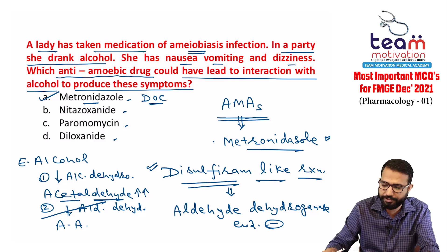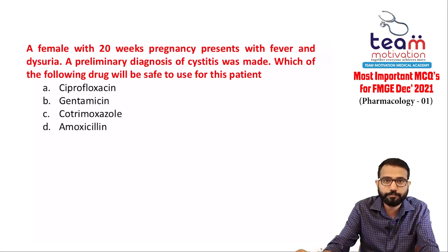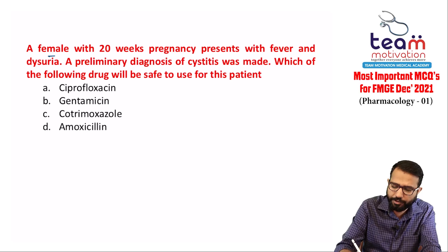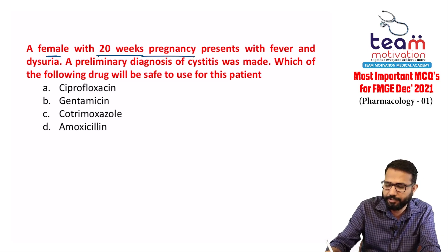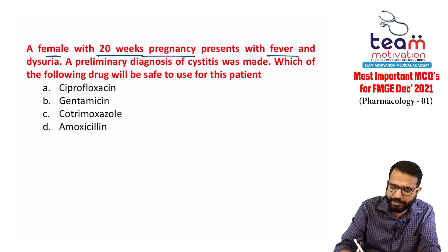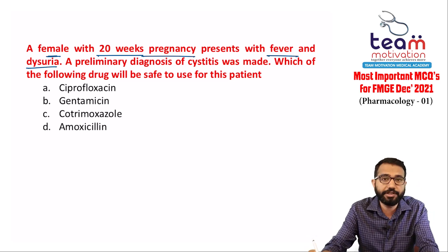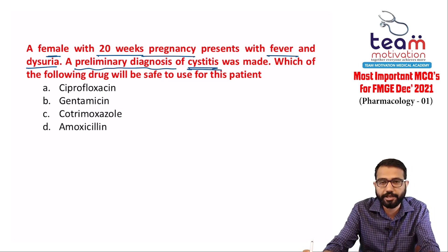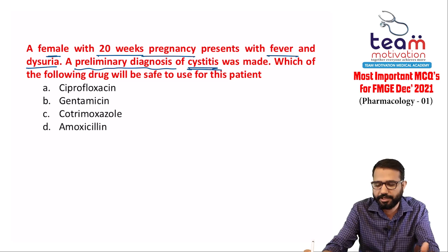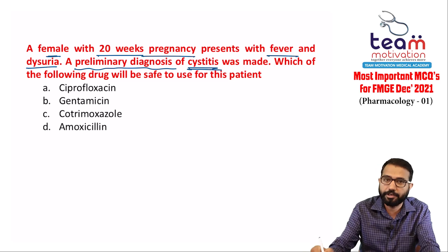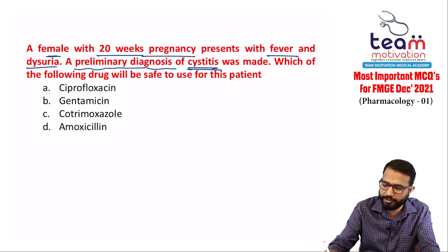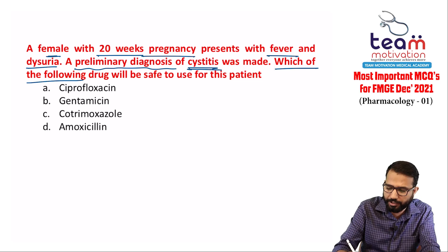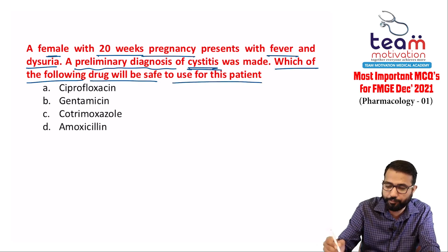The second question: a female at 20 weeks of pregnancy presents with fever and dysuria. A preliminary diagnosis of cystitis was made — infection in the bladder, i.e., UTI. Which of the following drugs will be safe to use for this patient? We need a drug that is both effective for UTI and safe in pregnancy.